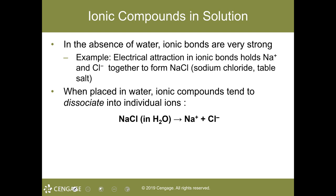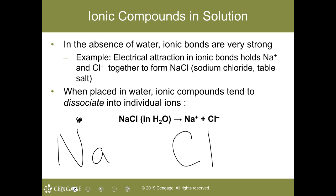Ionic bonds are strong when they're dry, and they're weak when wet. Sodium has one valence electron, and chlorine — found on the right-hand side of the periodic table right next to the noble gases — has seven valence electrons.